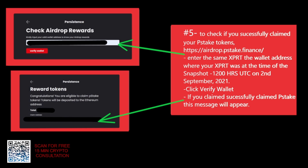To check if your transaction was successful and that you claimed your P-Stake tokens, go back to airdrop.pstake.finance and enter the same persistence wallet address you used at the beginning — where your persistence tokens were at the time of the airdrop on September 2nd, 2021 at 1200 UTC time. Put your wallet address in and press Verify. This will pop up saying Reward Tokens, Congratulations, you are eligible to claim P-Stake tokens, and it'll show your Ethereum address at the bottom. That is how you know you have claimed successfully.